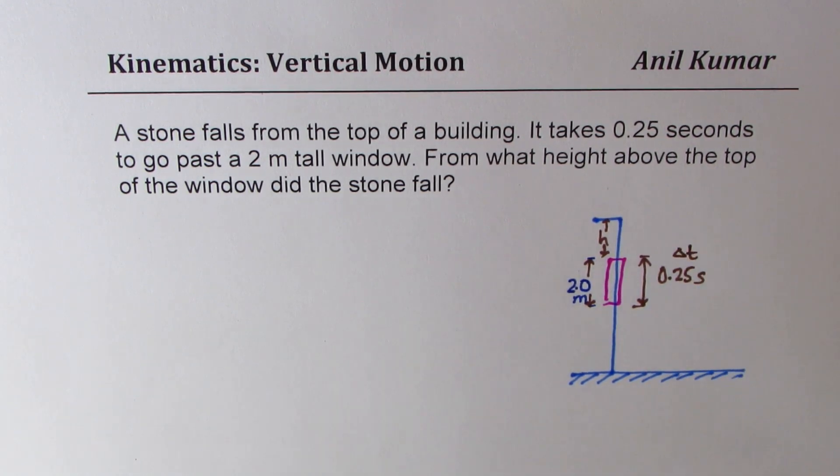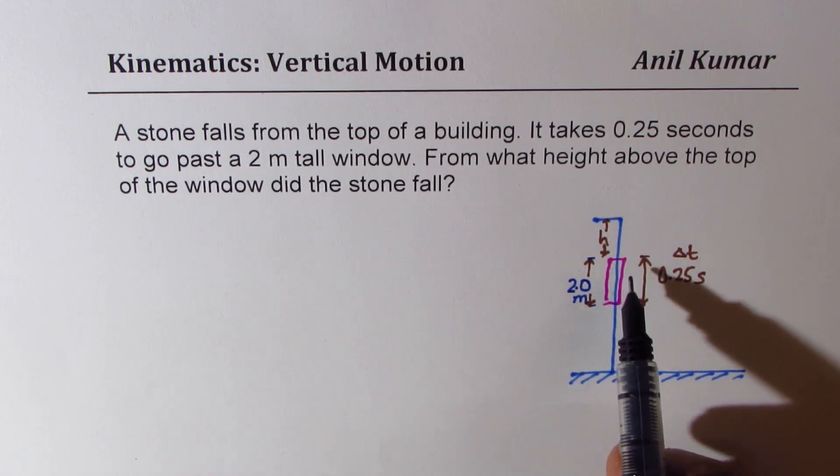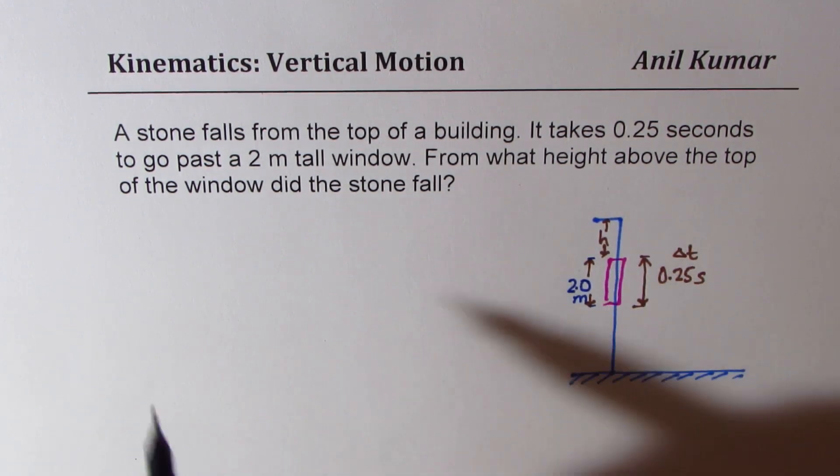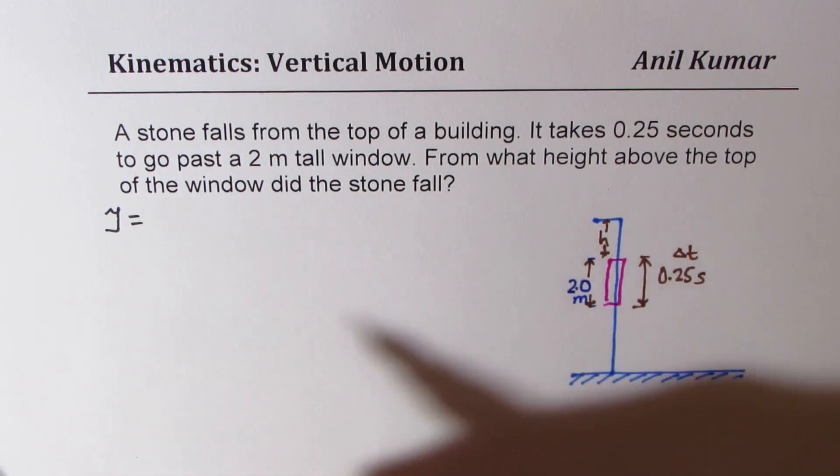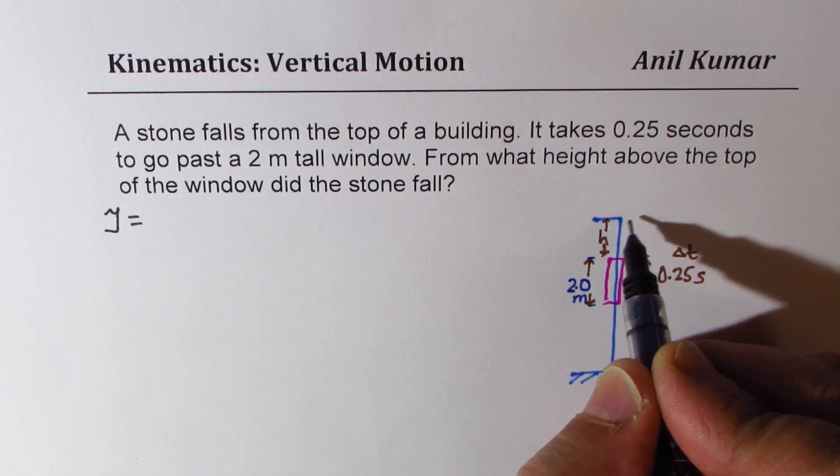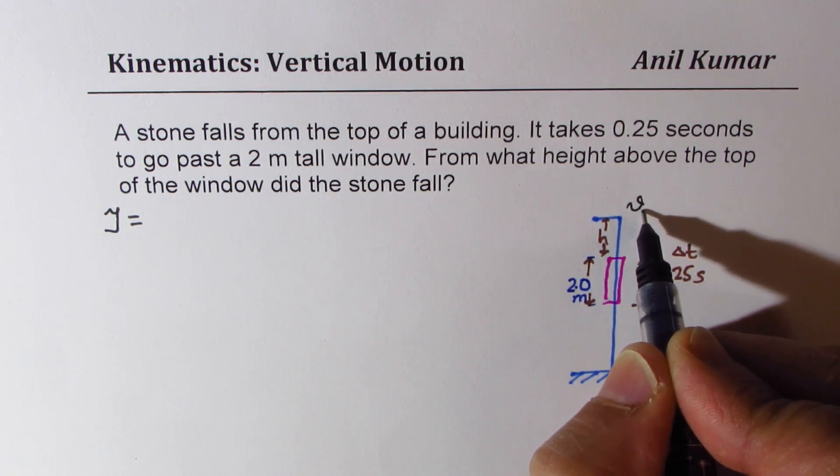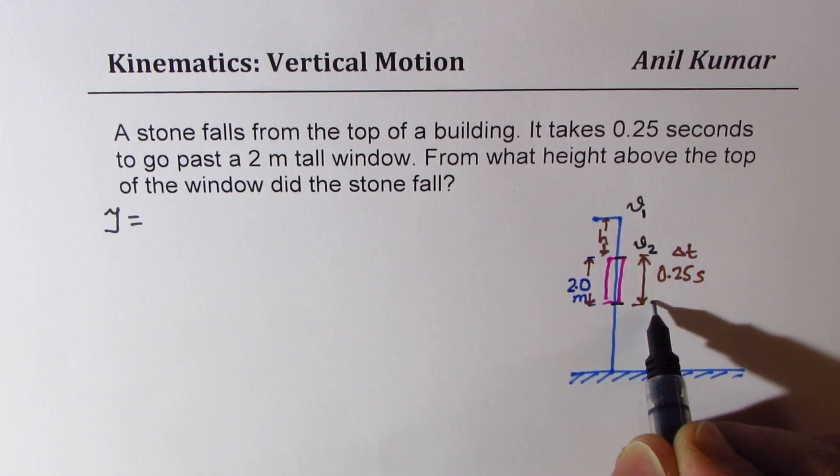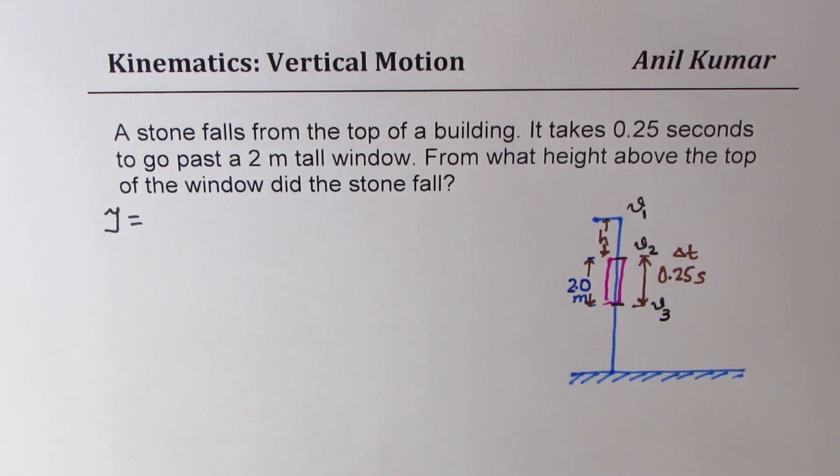To solve such questions, we can define the values at different places. We can use the equation y equals... Let's say the velocity at the top is v1, the velocity at this point as v2, and velocity at this point as v3.